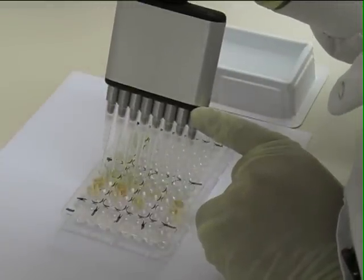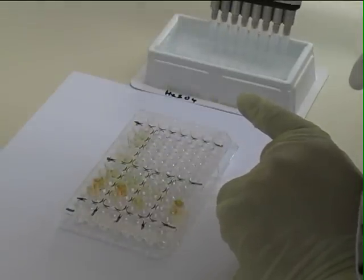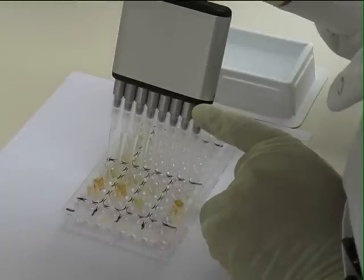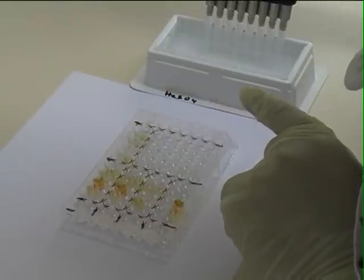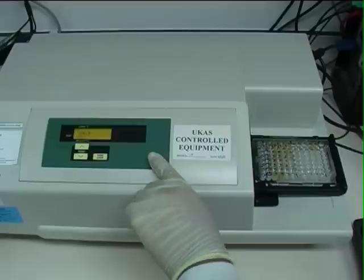After the colour has developed sufficiently, dilute sulphuric acid is added to all the wells to stop the reaction and the optical density of each well is read in a plate reader.